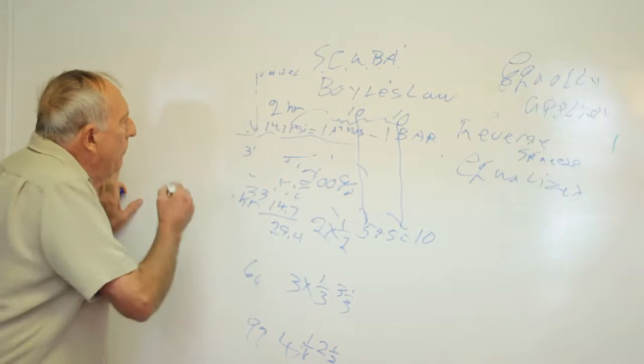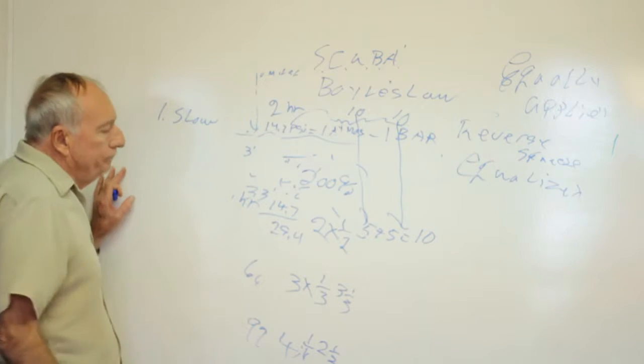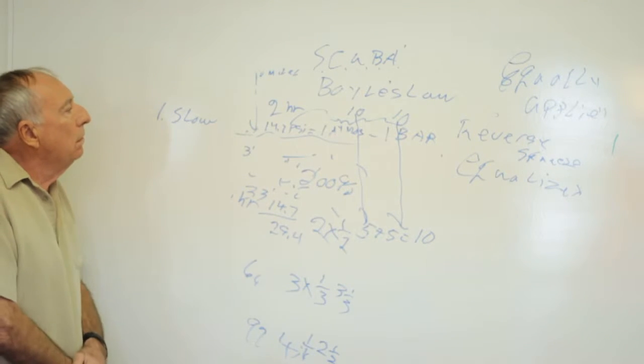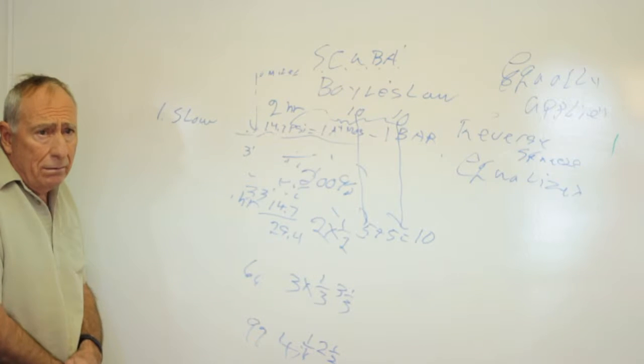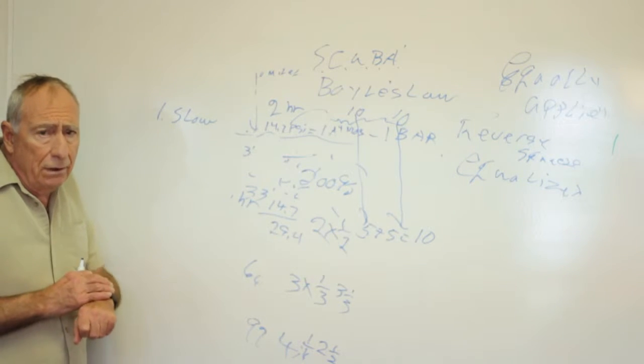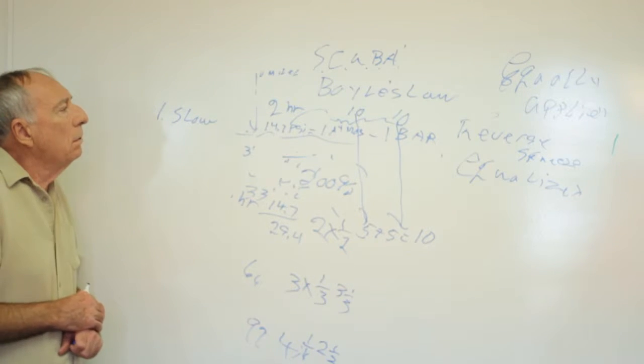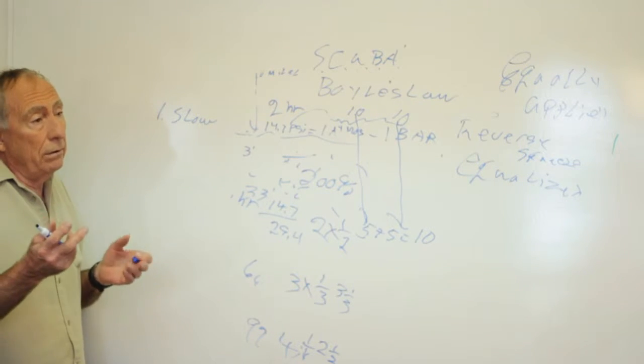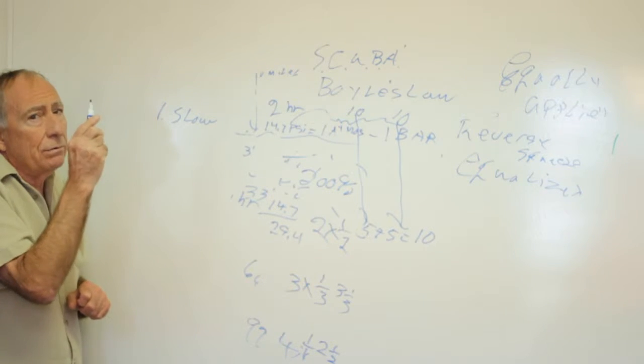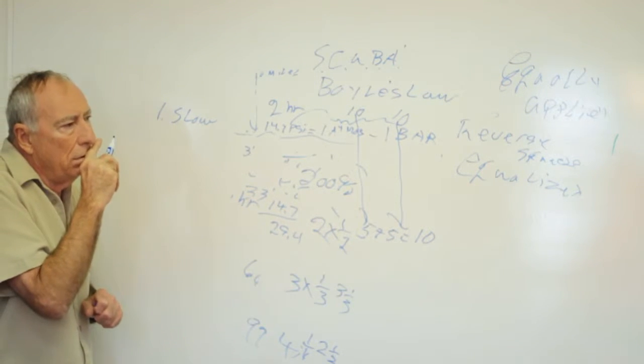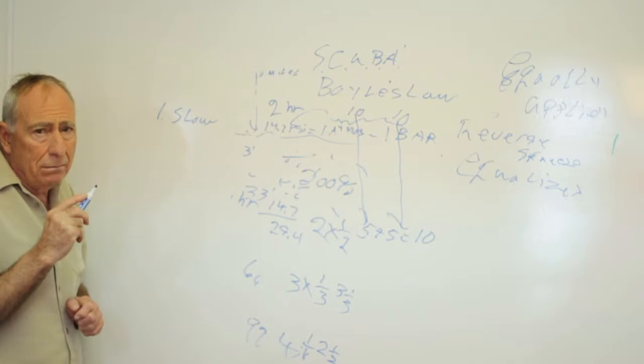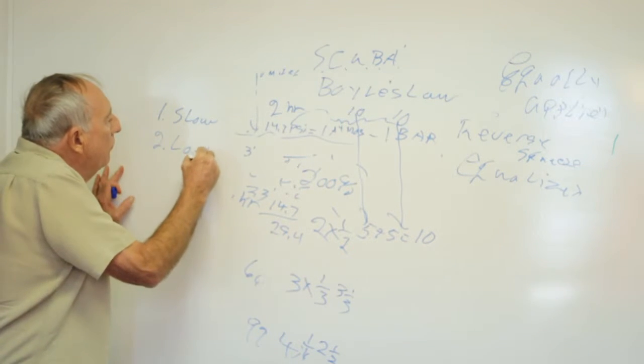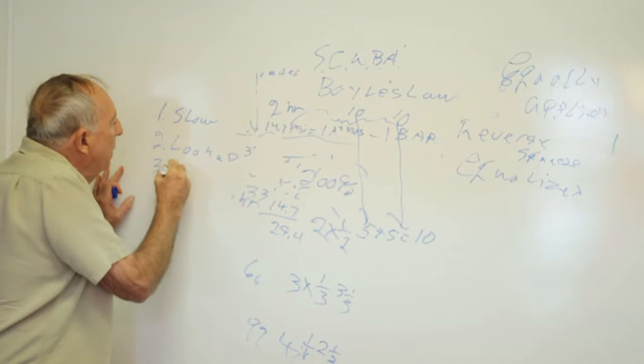Whenever we come up, we want to make sure we come up slow. 30 feet per minute should be our ascent rate. Now, how do you know 30 feet per minute? Well, our computers we use nowadays tell us if we're coming up too fast. Before our computers though, we would tell people to look up. Because by looking up, not only can you see where you're going, but you can watch the little tiny bubbles. They are traveling at 60 feet per minute. So we want to go slower than our little tiny bubbles. So we look up and we want to keep our airway open.